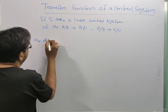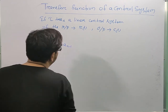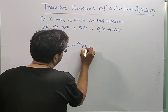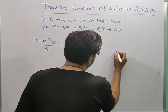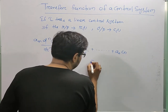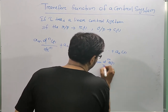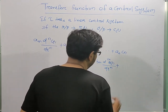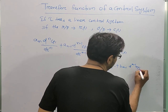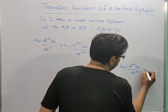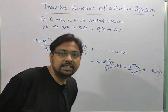The linear control system equation is: a_n (d^n c(t)/dt^n) + a_(n-1) (d^(n-1) c(t)/dt^(n-1)) + ... + a_0 c(t) = b_m (d^m r(t)/dt^m) + b_(m-1) (d^(m-1) r(t)/dt^(m-1)) + ... + b_0 r(t).